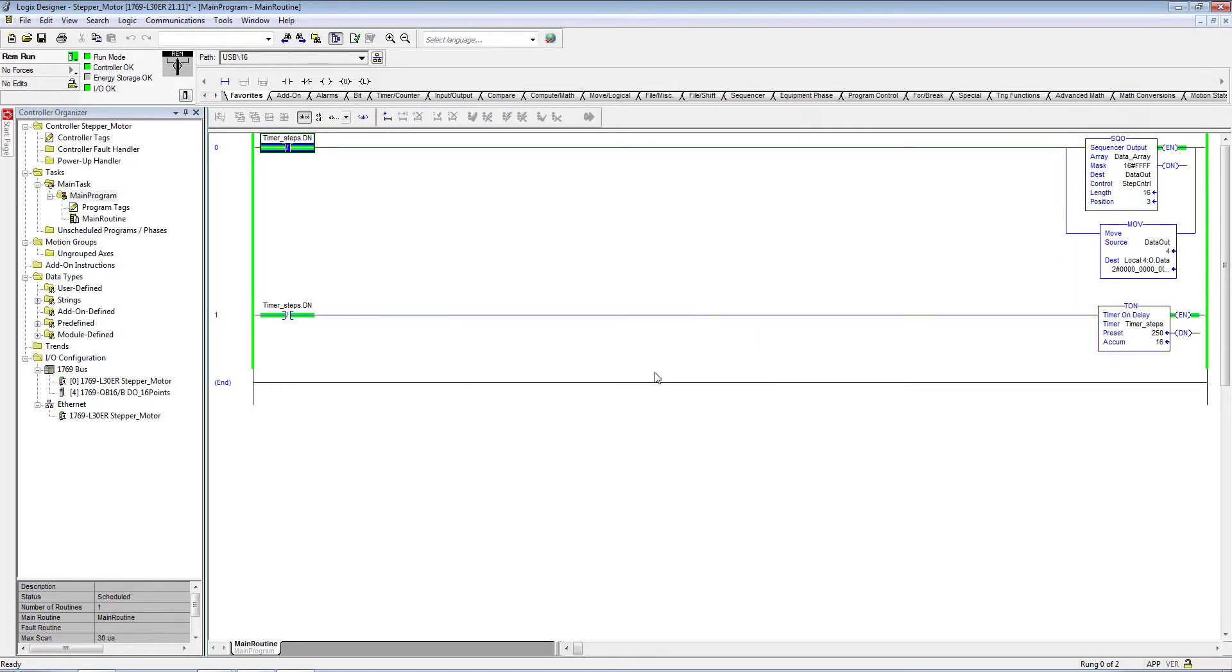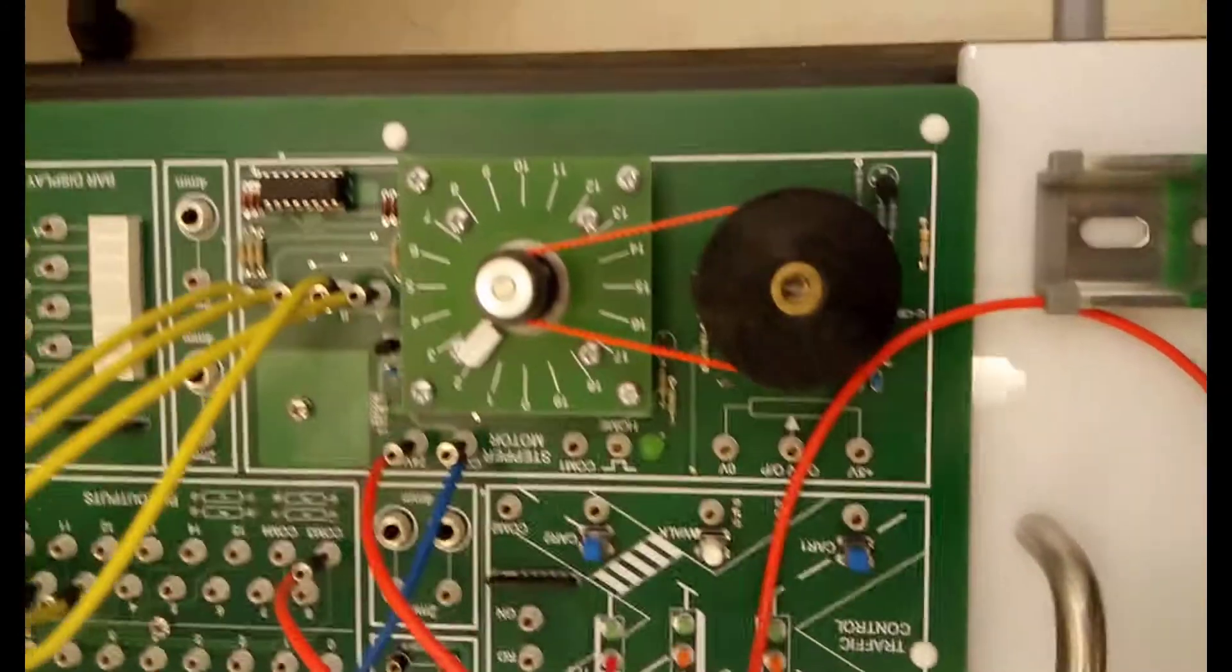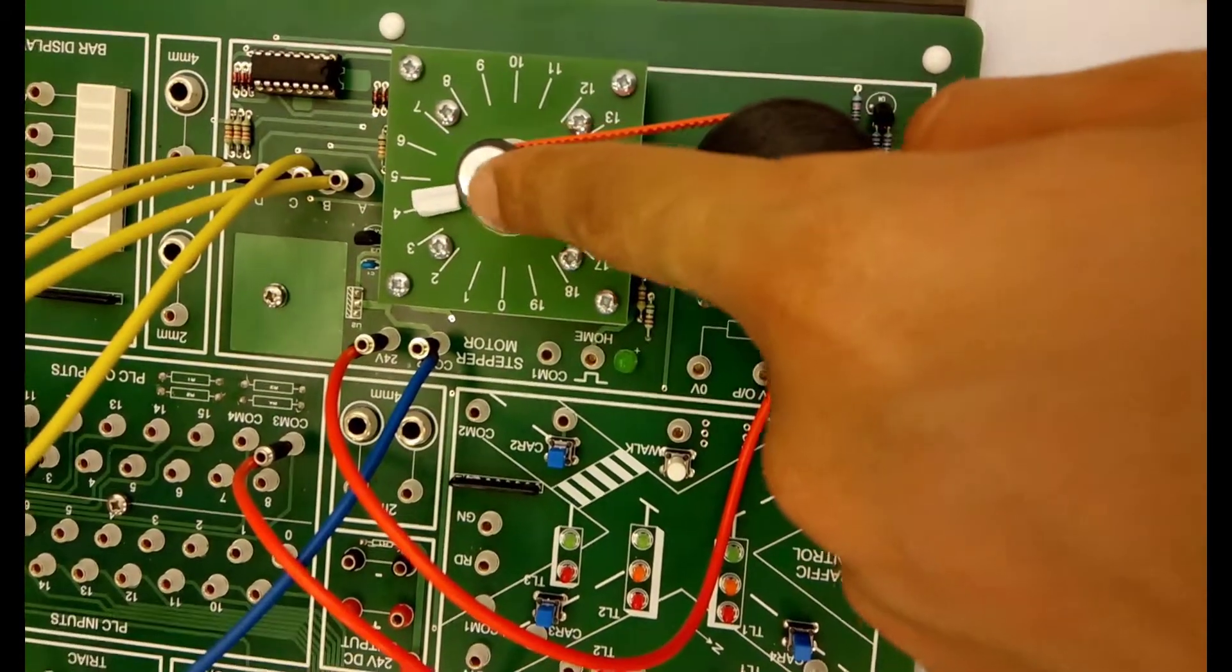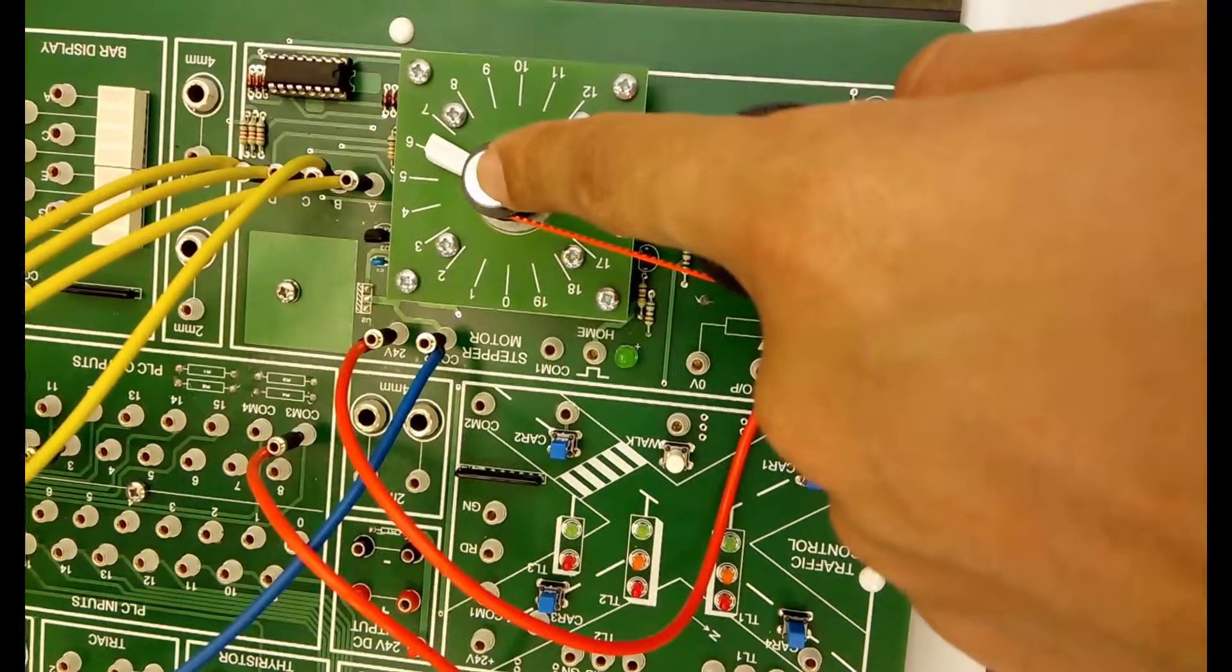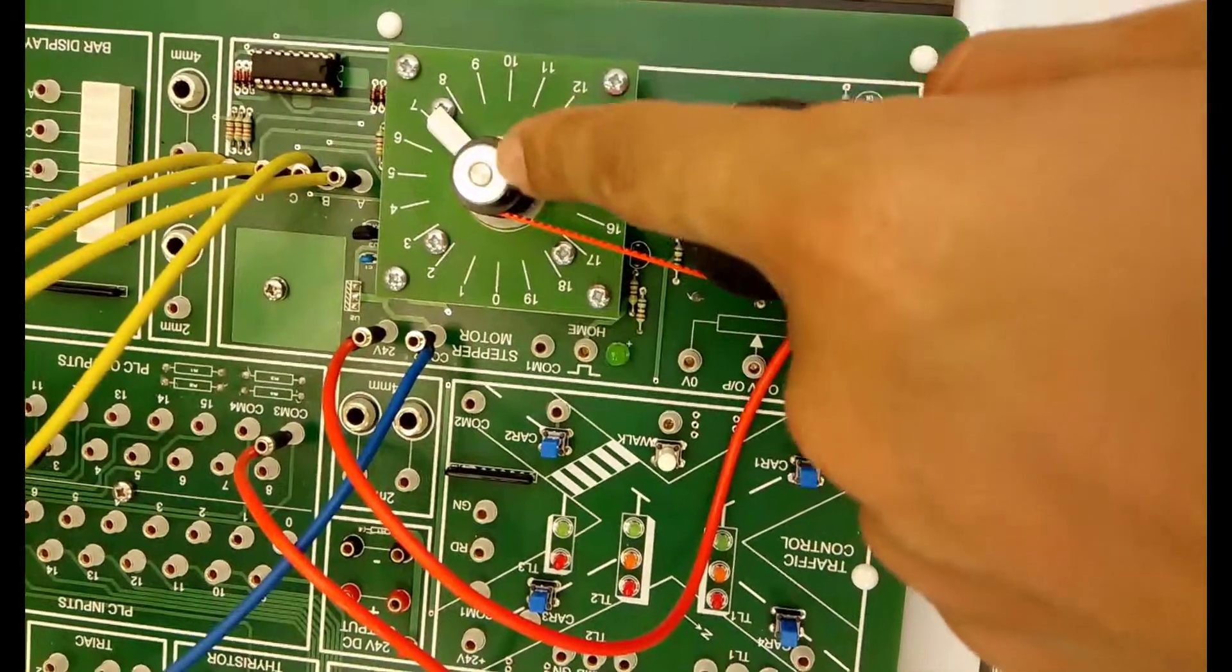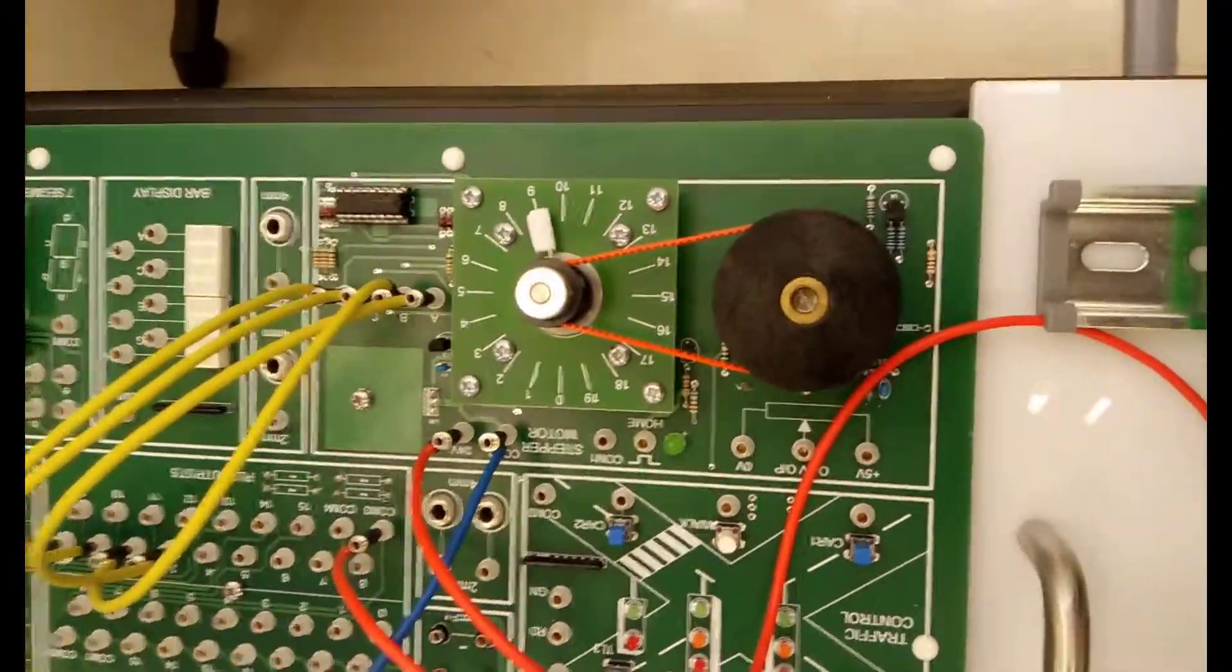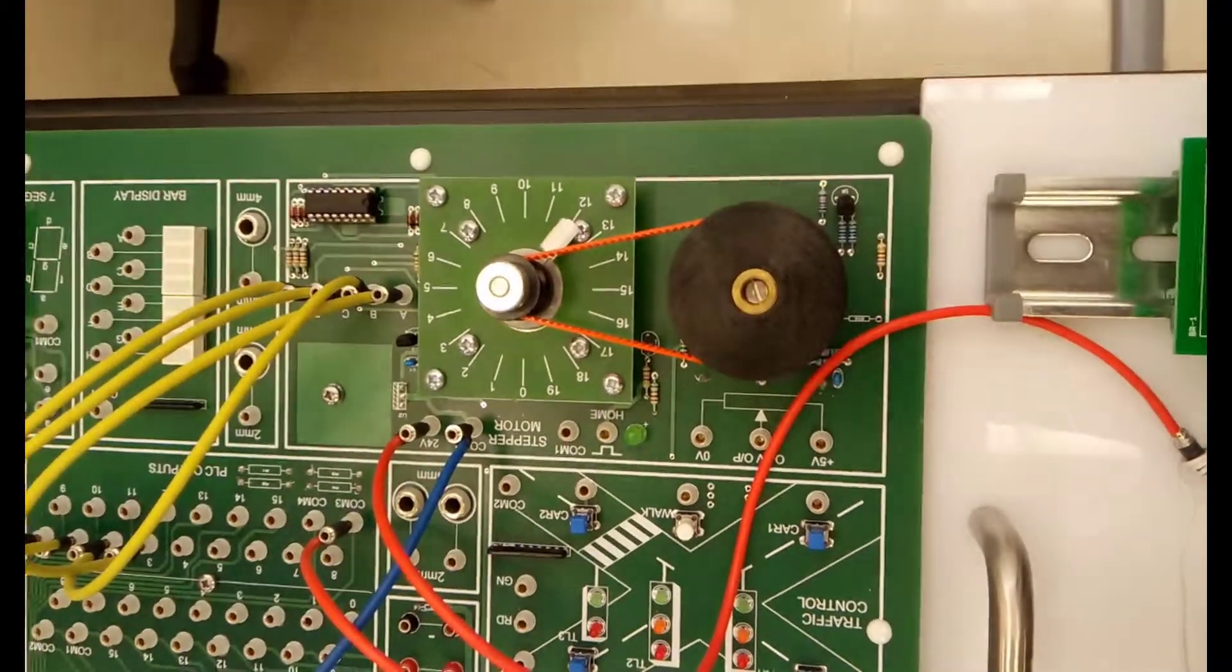As you can see here, now the stepper motor is moving with half step sequence mode and it's moving a bit faster. Earlier it was taking a step of 1.8 degrees, now it's moving with 0.9 degree angle. That's all about today's experiment. Oh yeah, I missed how to change or rotate it in counterclockwise direction.